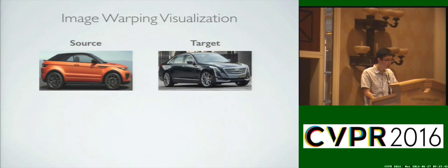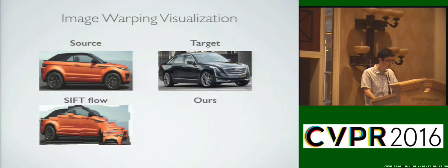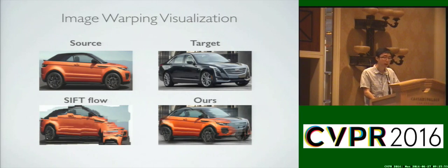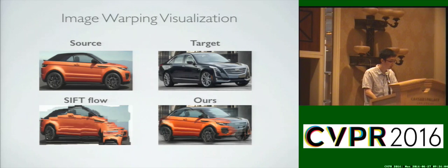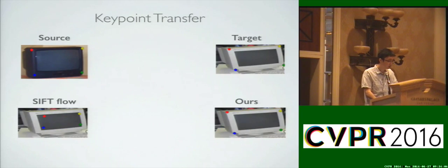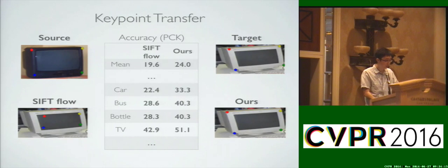Let's look at another example, where the right half of the source car is occluded in the target car. Here's the warping result by C-Flow, and here's ours. One can see that our warping result not only aligns closely with the target car on commonly visible regions, but also infers that the right half of the car is occluded in the source and should not be warped. To quantitatively measure the alignment performance, we evaluate the keypoint matching accuracy on the Pascal 3D dataset. On this task, we are 4.4% better than C-Flow overall, and about 10% better in categories like car, bus, bottle, and TV.